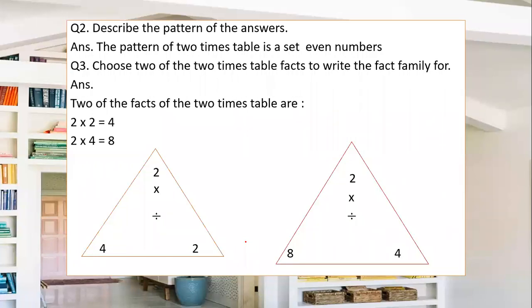Next we have: choose 2 of the 2 times table facts to write the fact family. Yesterday we discussed in detail how to write the fact family. The facts of a table are fixed — for example, 2 one times is 2, and 2 three times is 6. The facts are already fixed and there is no alteration.